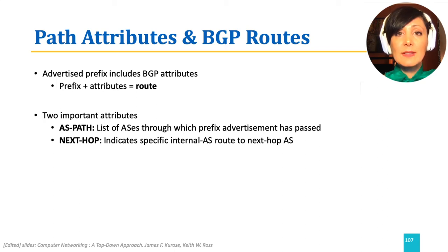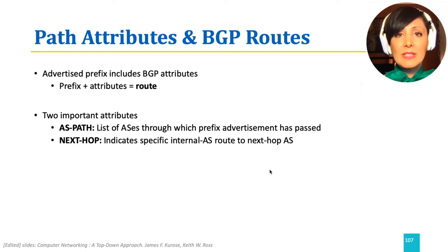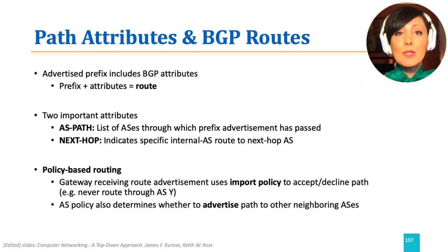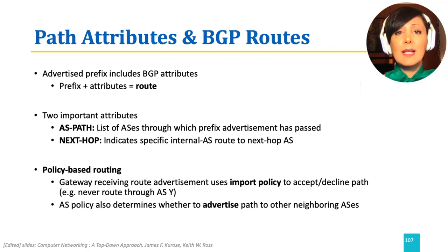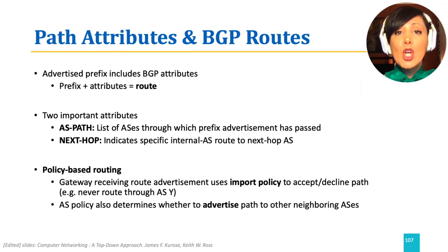An important question at this point is: where are the policies applied? A gateway receiving a route advertisement uses an import policy to accept or decline paths. That policy can have a form similar to: never accept a route through a certain AS, like AS Y. AS policy also determines whether to advertise paths to other neighboring ASs. For example, AS X might not want to route packets of AS Y, in which case it does not advertise routes to it.